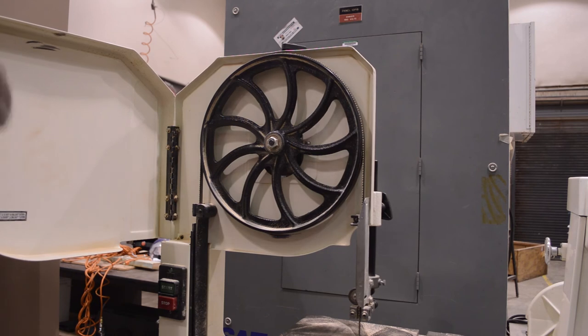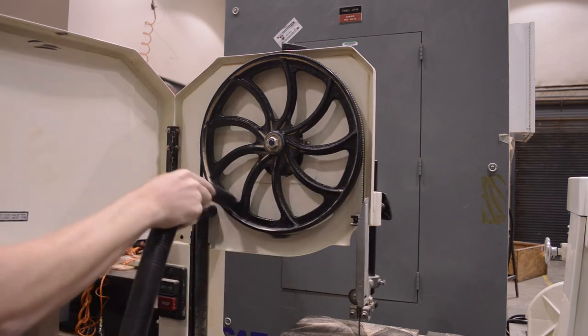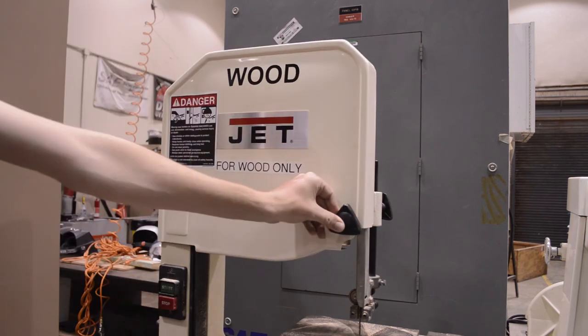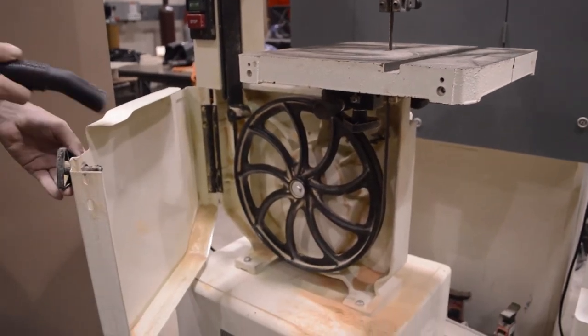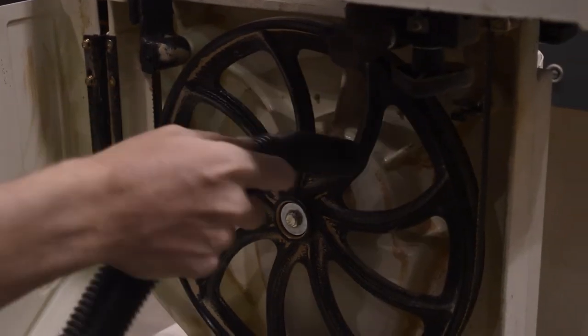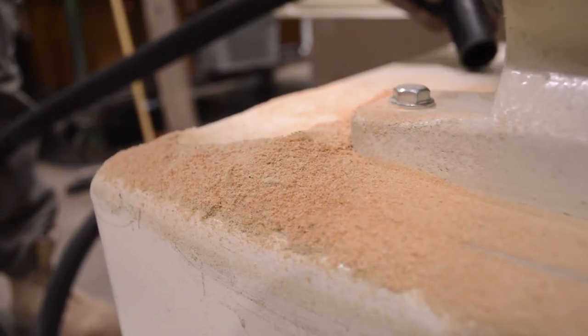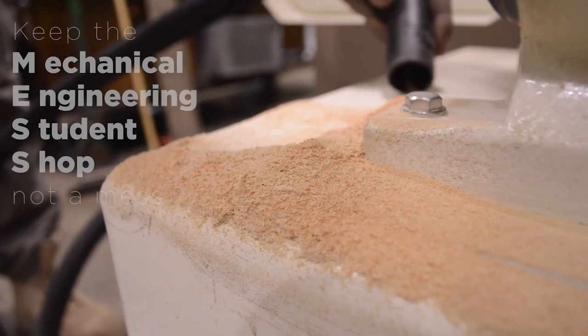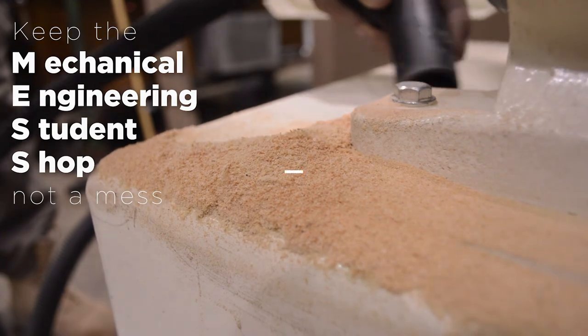As always, clean up the machine and the surrounding area before you leave. Two compartments often overlooked can be found above and below the table. So let's do our best to keep others impressed and keep the mess not a mess. Bye.